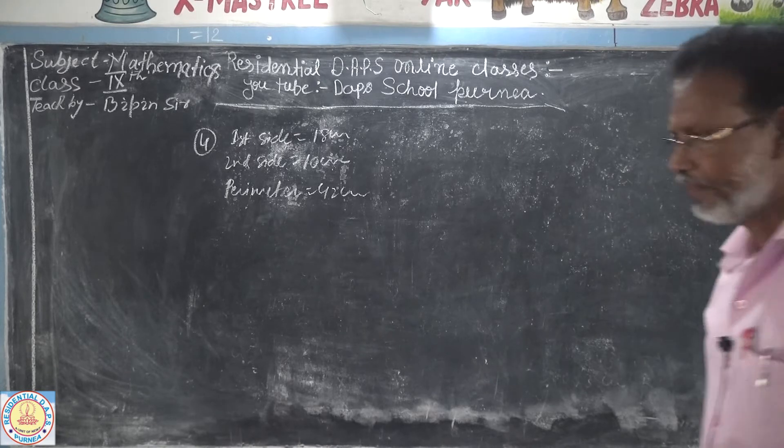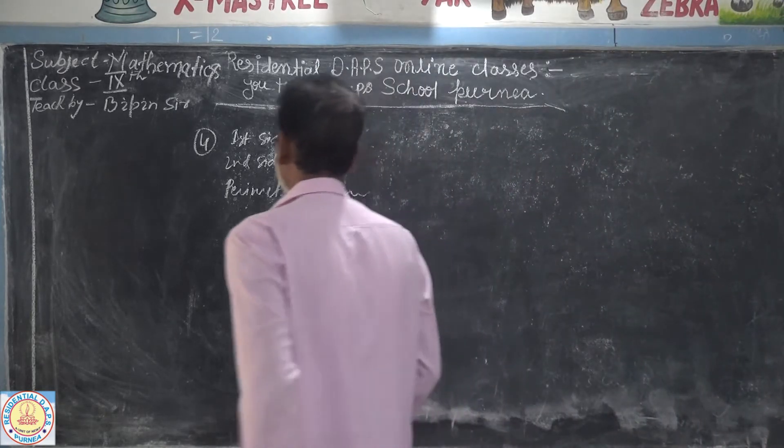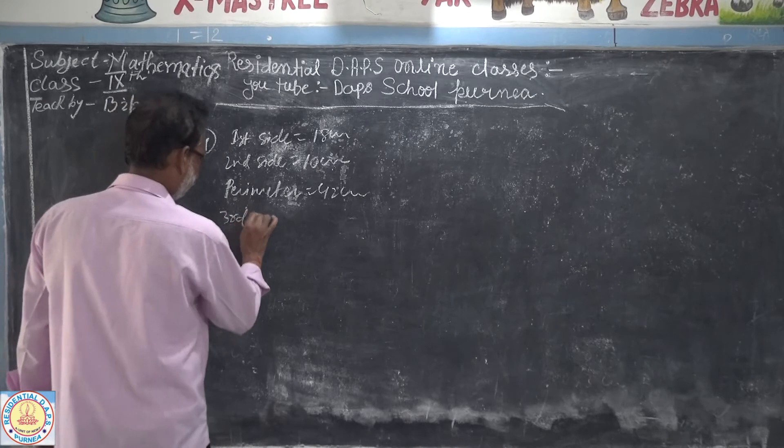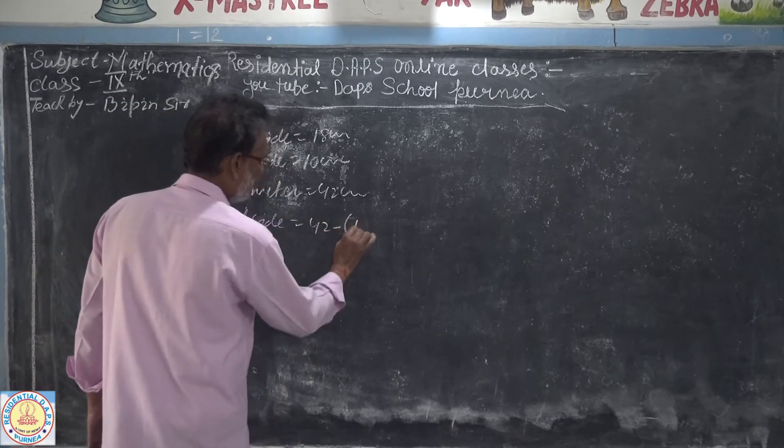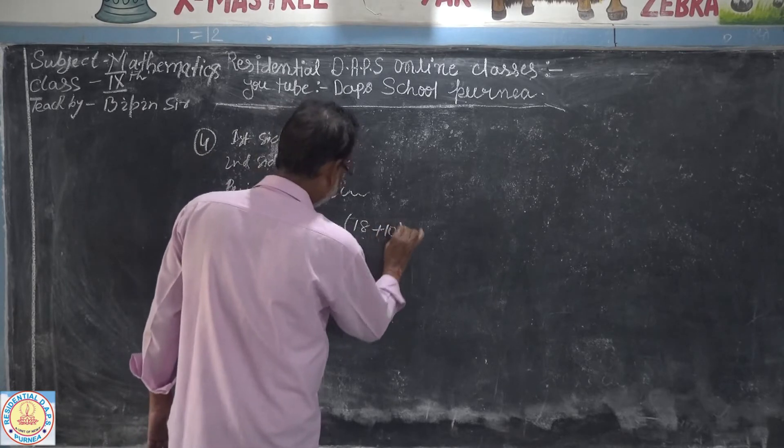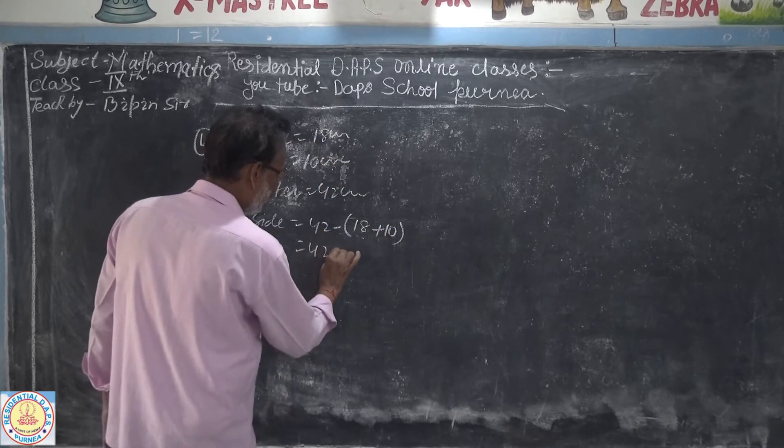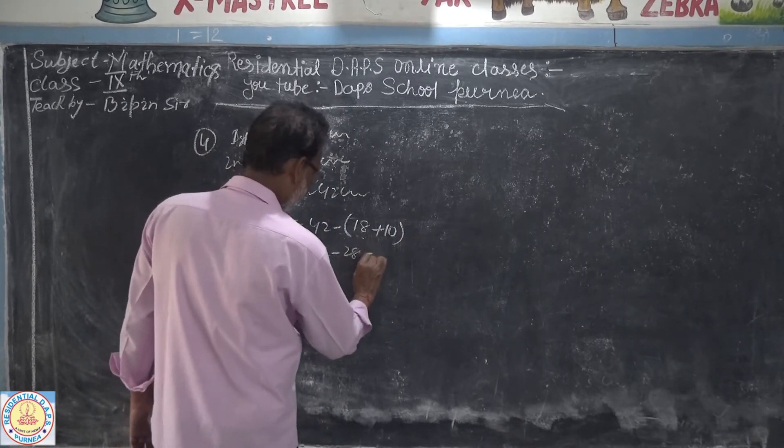First find the third side. Third side equals 42 minus 18 plus 10. 42 minus 28 is equal to 14 cm.